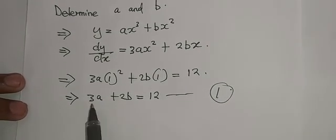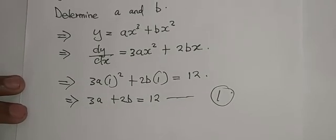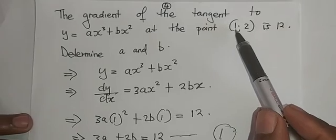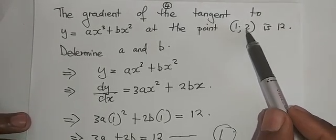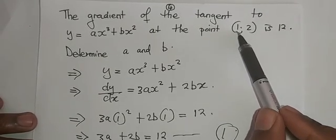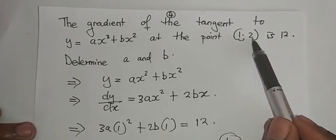Since we are having 2 unknowns, which means we must make 2 equations. This one we are told about the gradient of the tangent at this point. One good thing is it's also a point on the equation.